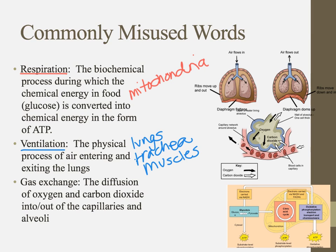Finally, we have the process of gas exchange, and gas exchange is the real crux of all this — it's what we're really aiming for. This is the ability to diffuse oxygen and carbon dioxide into and out of the capillaries and the alveoli. So this involves capillaries, alveoli, and your blood cells.